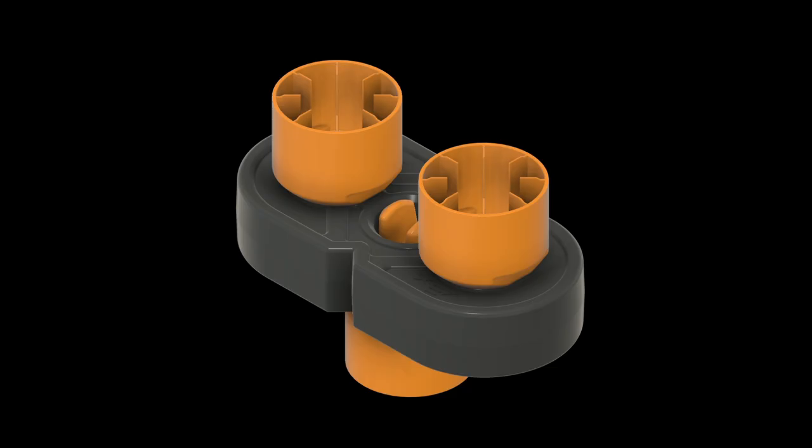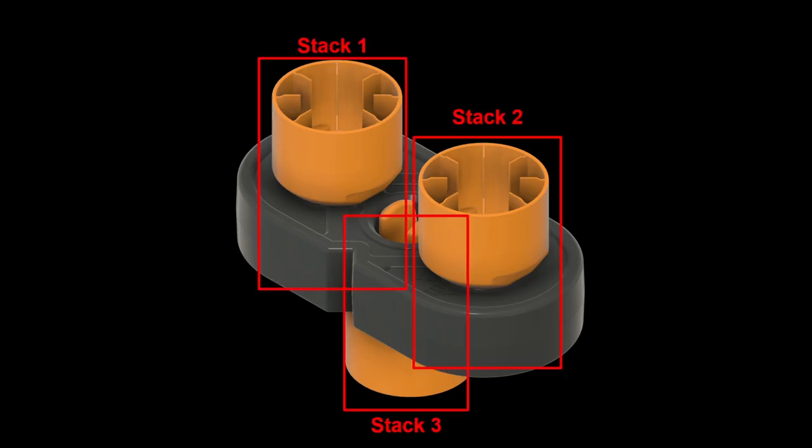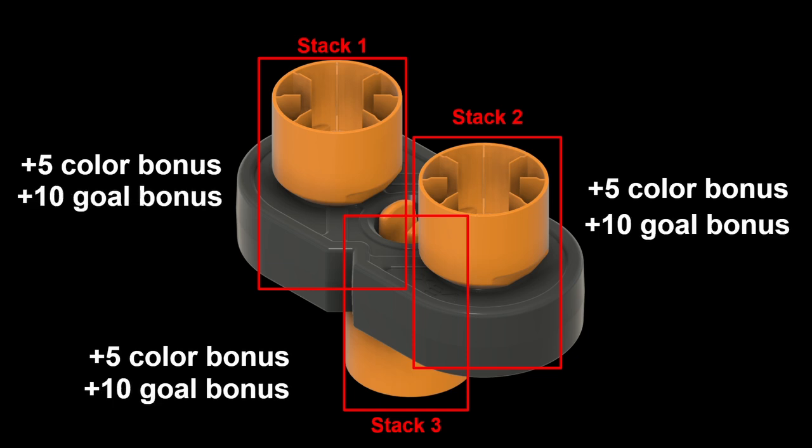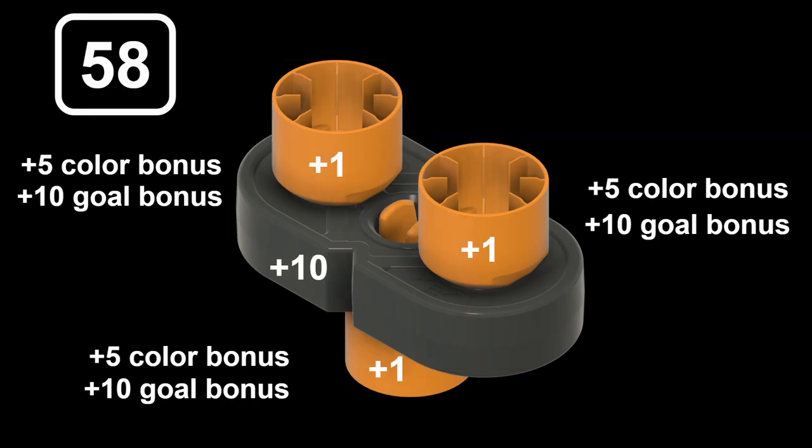Here's a slight variation from the Q&A. How many points do you think this is worth? Feel free to pause and try to guess. As in the previous example, there are three stacks here: one, two, and three. Each stack gets five points for having two colors, gray and orange. Each stack also gets the 10-point matching goal bonus, again, because they have a beam in them. And the score for each pin and the beam brings this up to 58 points.